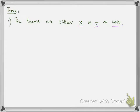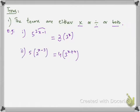Examples of Type 1: in Example 1, this 2 is multiplying with 3 power x and we have a combination of powers on the left side. In Example 2, this 5 is multiplying with this term and 4 is multiplying with this term. So in Type 1, the terms are either multiplying or dividing or both.